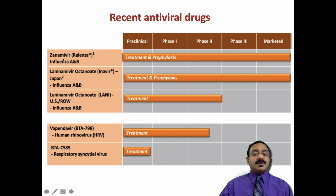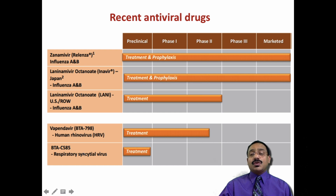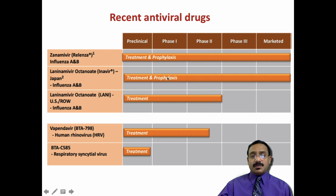New antiviral drugs like zanamivir are given for influenza A and B. Laninamivir is given in Japan, and its derivatives are also given in the U.S., including for human rhinoviruses and respiratory syncytial virus. There are only two marketed antiviral drugs for influenza: zanamivir and laninamivir, both used for treatment and prophylaxis.